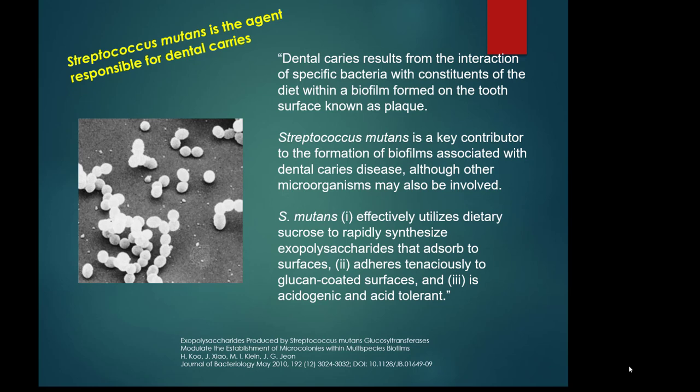Streptococcus mutans takes sucrose — refined sugar, sugar cane, or corn syrup — and basically blows out these sugar strings, much like cotton candy. That forms the slime layer. Importantly, it is only able to do this with sucrose. If you give it a different sugar like fructose, found in fruit, it is not able to form that slime layer. So Streptococcus mutans can only do this with sucrose, not with fructose or natural sugars.